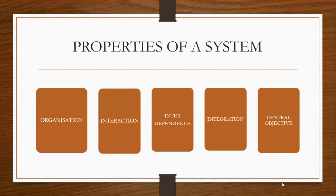Another property of a system is integration. Integration means how the components of the system are connected together — depending on each other and working in line with each other so that each component performs a unique function towards achieving the overall goal of the organization. By integration, we mean that the parts of the system work together within the system to ensure that the desired goals of the organization are achieved.